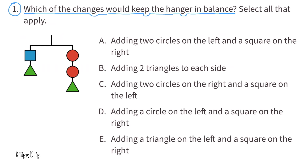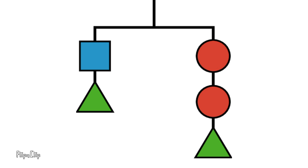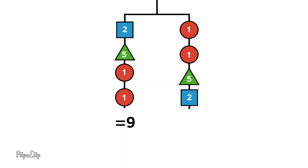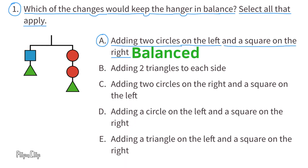Problem number 1. Which of the changes would keep the hanger in balance? Select all that apply. Option A: Adding two circles on the left and a square on the right. To make this easier, let's give these shapes imaginary values — triangles are worth 5, circles are worth 1, and squares are worth 2. Adding a square to the right and two circles on the left adds 2 to each side, so each side totals 9. The answer for A is balanced.